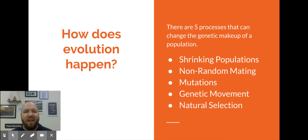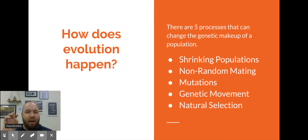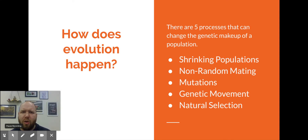Welcome back. We're on to how does evolution happen. From the last video, we talked about how there has to be some type of process that makes the percentage of genes in a gene pool change from one generation to the next. There are five of those processes, based off of the 'five fingers of evolution' video. Make sure you go back and review that.